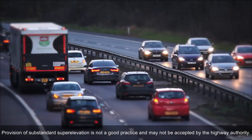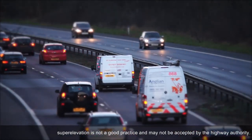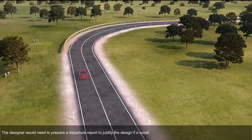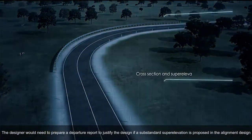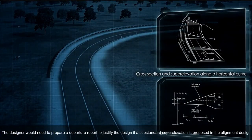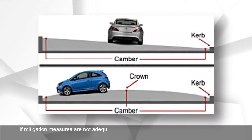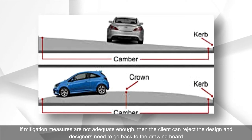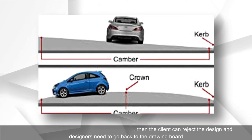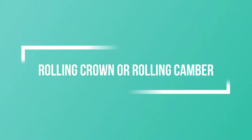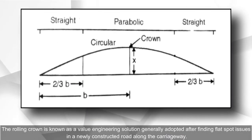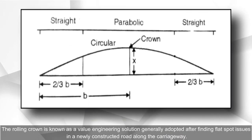Provision of substandard super elevation is not a good practice and may not be accepted by the highway authority. The designer would need to prepare a departure report to justify the design if a substandard super elevation is proposed in the alignment design. If mitigation measures are not adequate enough, the client can reject the design and designers need to go back to the drawing board.